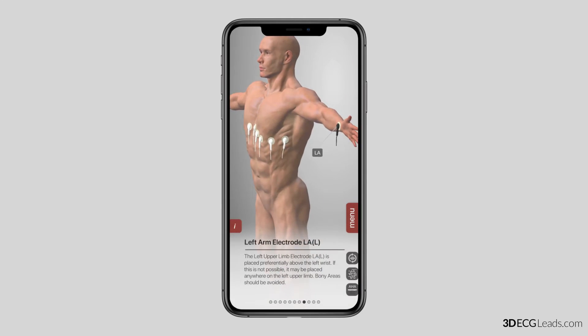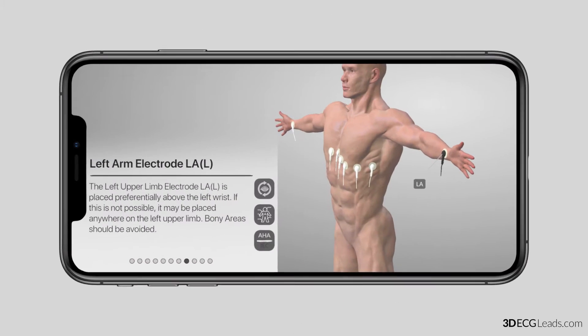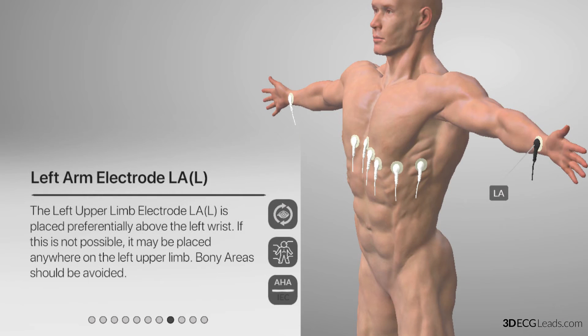The first system that we will look at is the AHA system. As pictured on the model, the left arm lead is named LA, and it should be placed slightly above the left wrist, and is black in color.